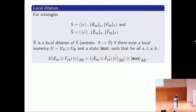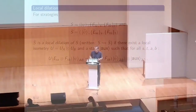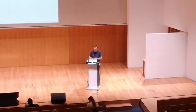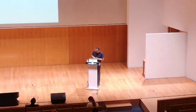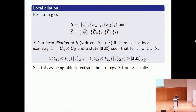For two strategies s and s-tilde, we say s-tilde is a local dilation of s if there exists a local isometry and an auxiliary state such that, for all questions and answers, applying the local isometry to the measurements on the state extracts s-tilde. This means that using only local operations we can extract s-tilde plus some auxiliary content from strategy s — essentially these strategies do the same thing up to small local changes.